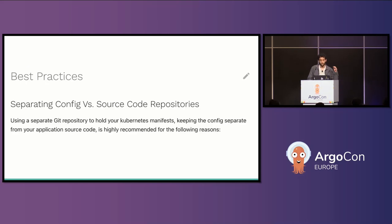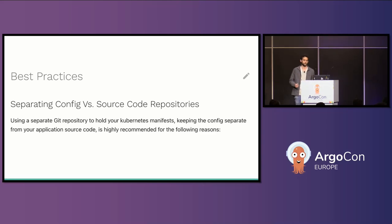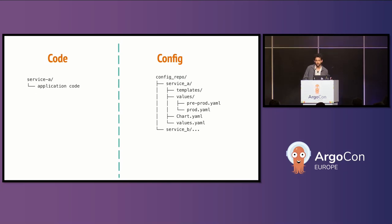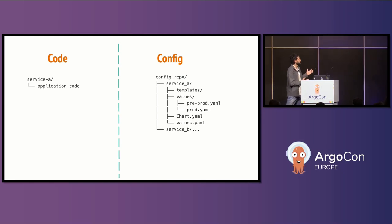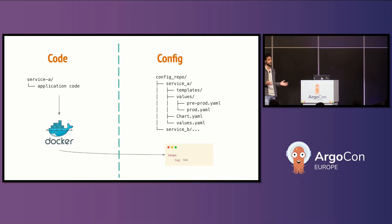I'm here to talk about one of the most common and documented best practices: separating application code from Kubernetes configuration. Two years ago we kind of broke it and combined them into one repository. Our story begins with two repositories — one for the application code and one for the Helm chart with the Kubernetes config. We built a simple deployment pipeline that built an image and changed the image tag to the version to be deployed.